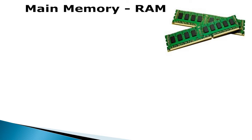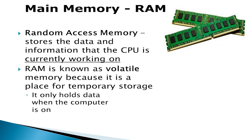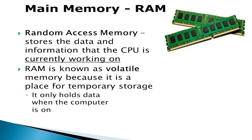We now look at the storage capacities of a computer. The main memory consists of two main types. First, the RAM chip. RAM means random access memory, which stores data that the CPU is currently working on. This is a place for temporary storage — a volatile memory.